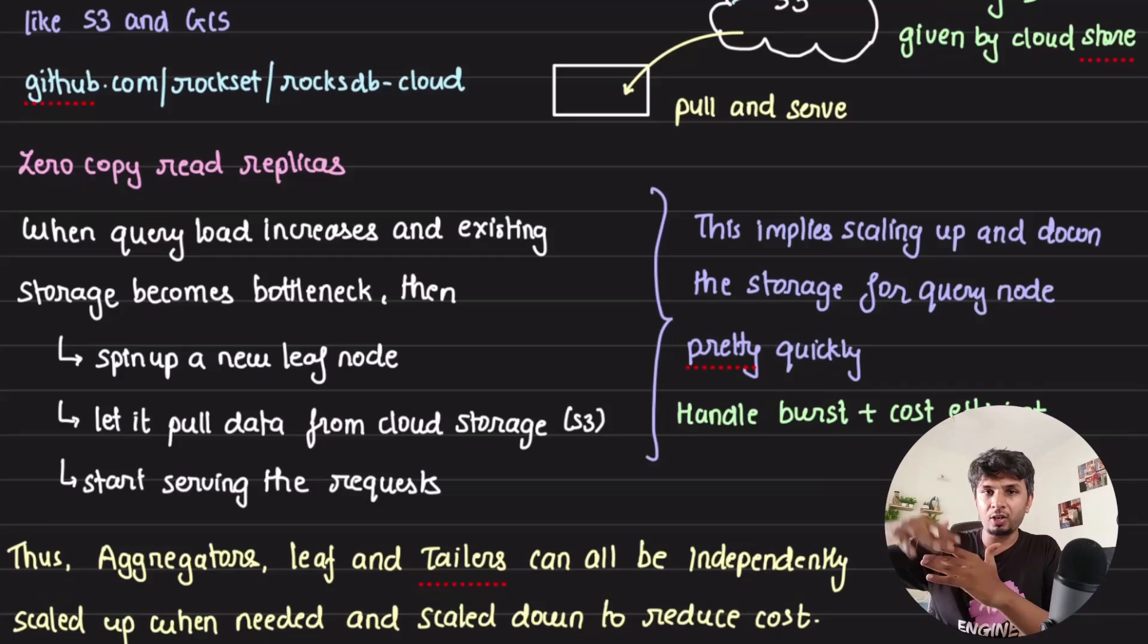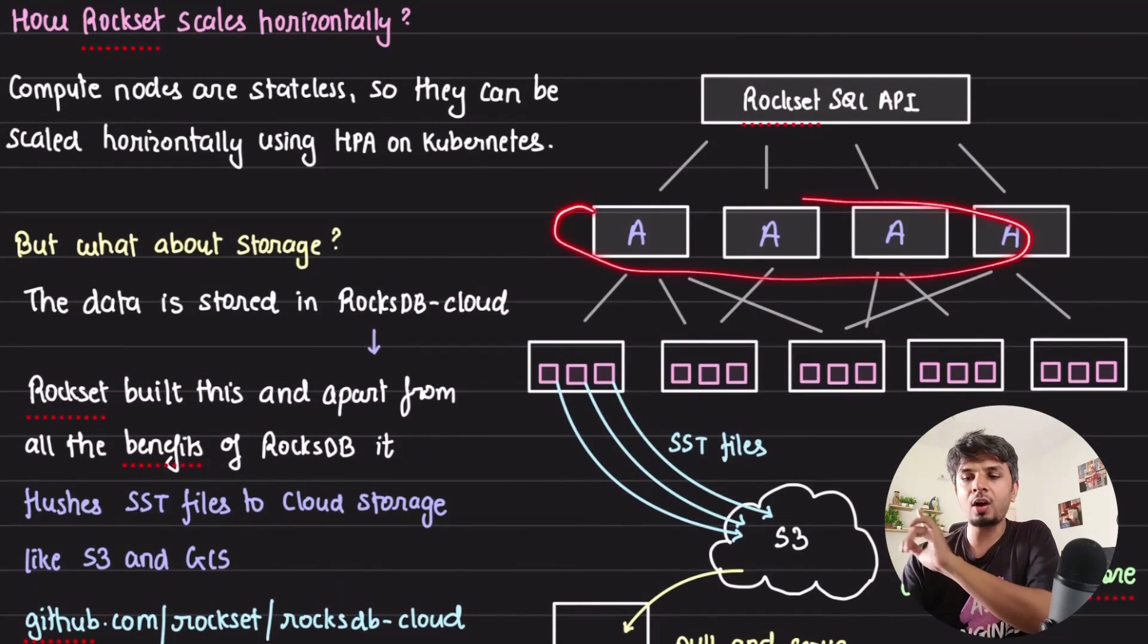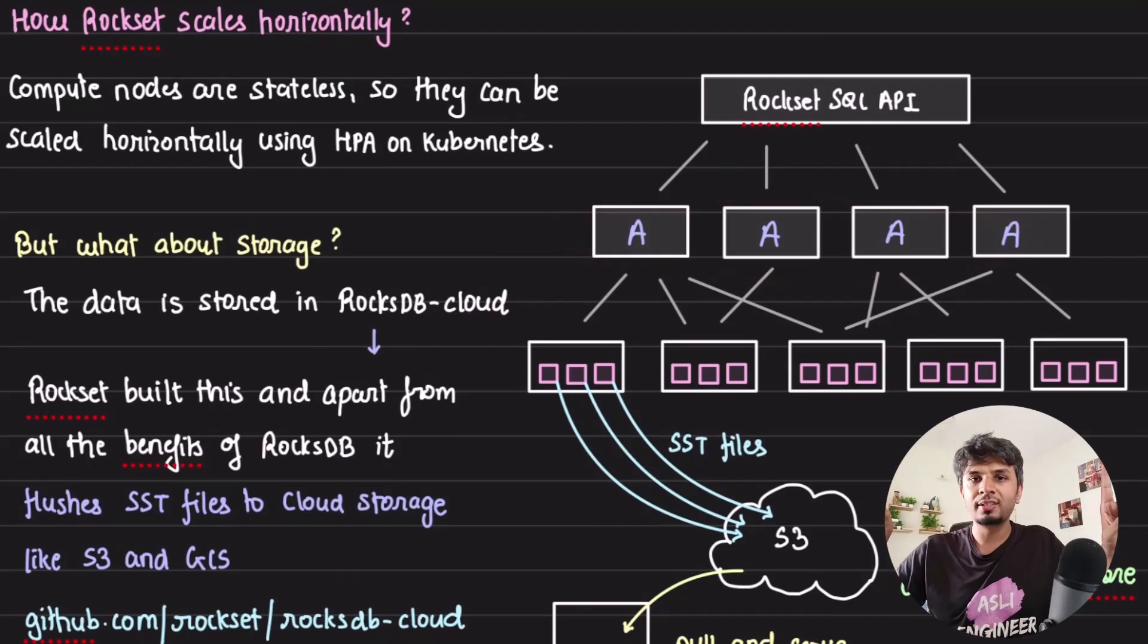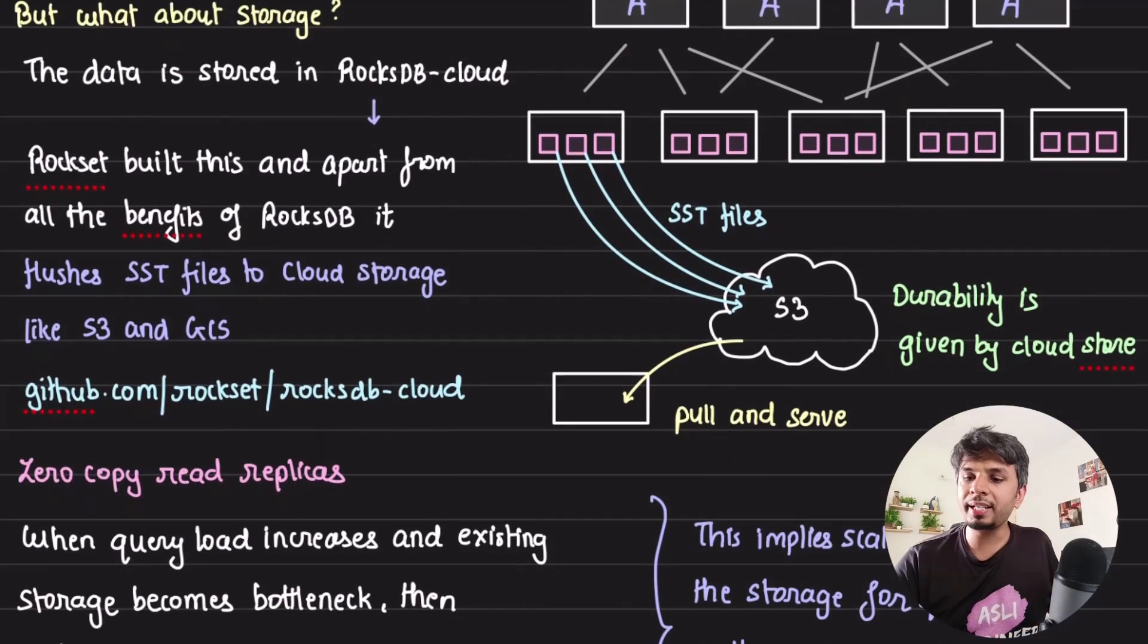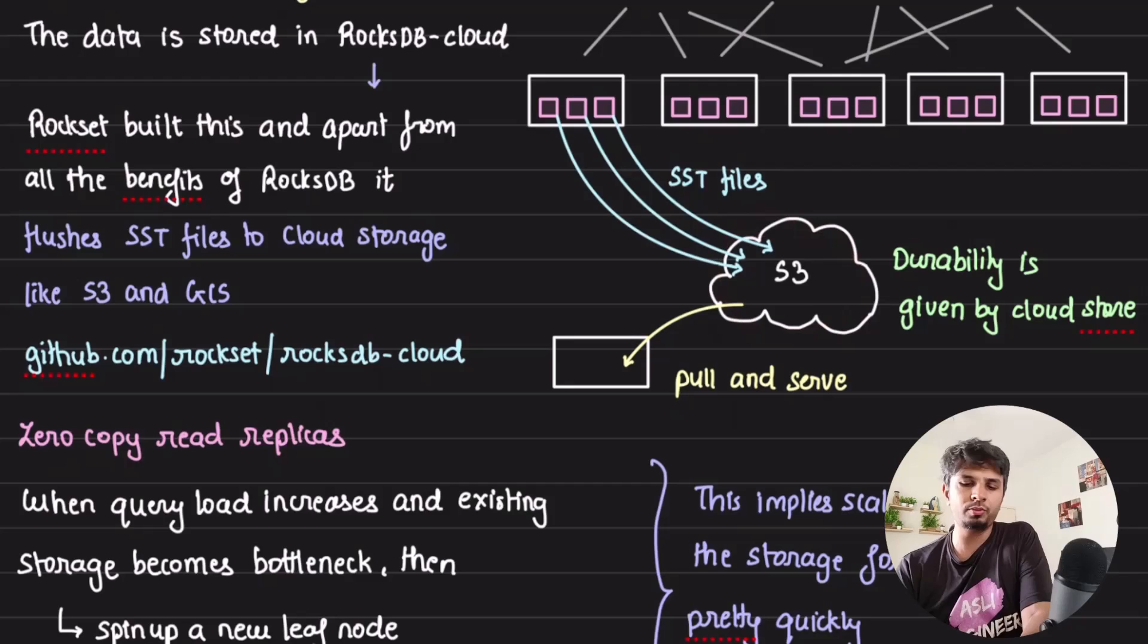Now even if you get a burst of traffic on your query side, not a problem. The best part is you can not only horizontally scale out your aggregator nodes to handle large number of queries, you can also scale out your storage and shrink it.